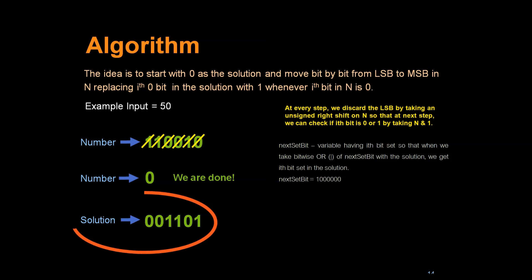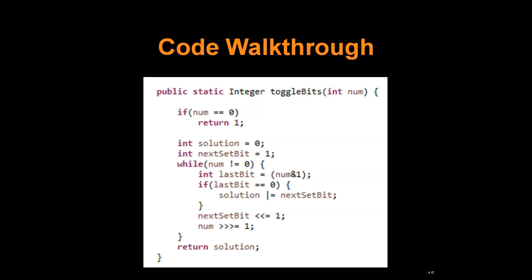We'll quickly have a code walkthrough for this problem. We initialize solution as 0 and next set bit to 1. And while the current number is not 0, what we'll do is first find out whether the current bit is 0 or not.